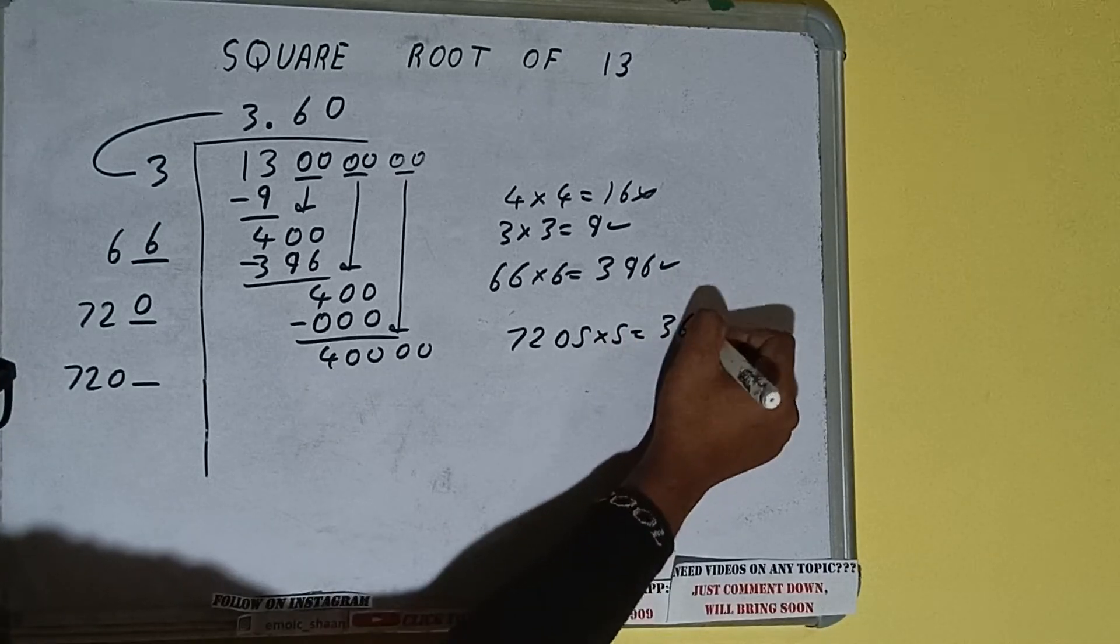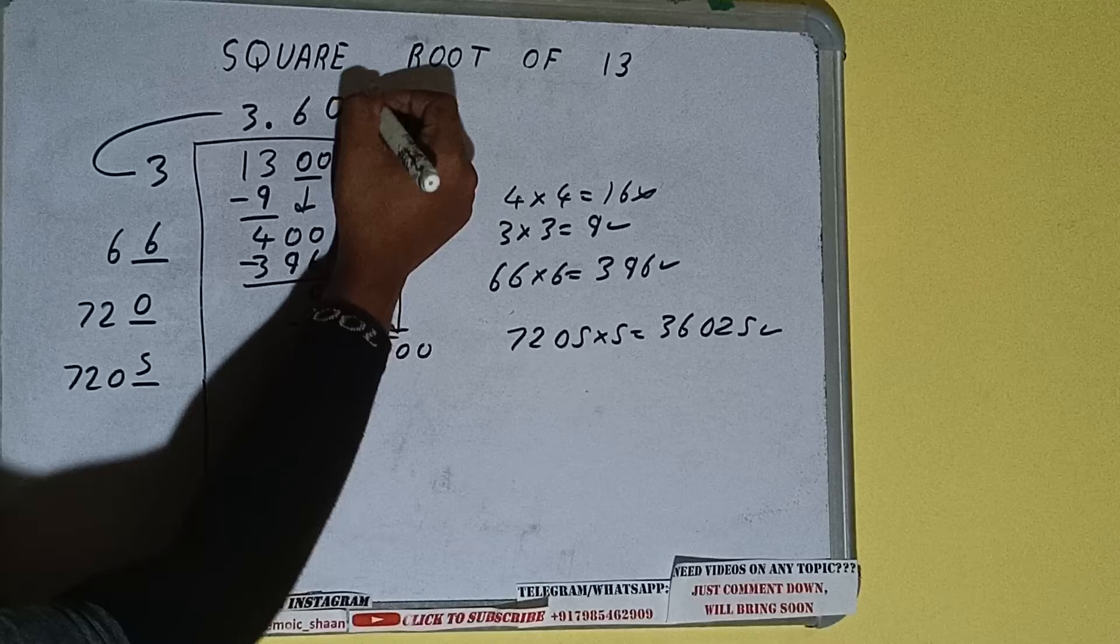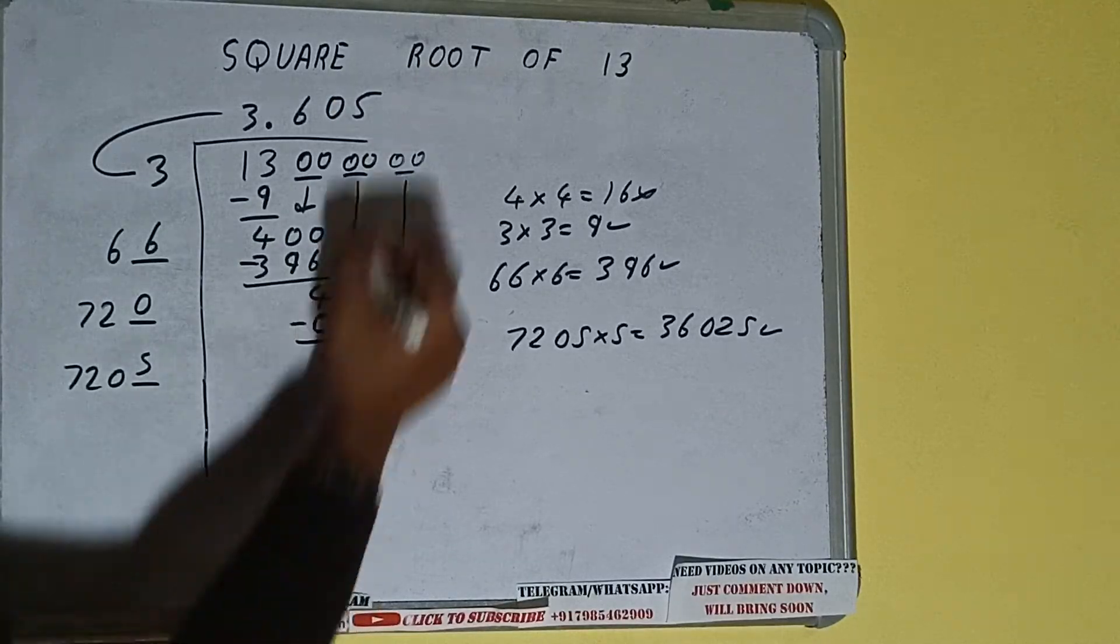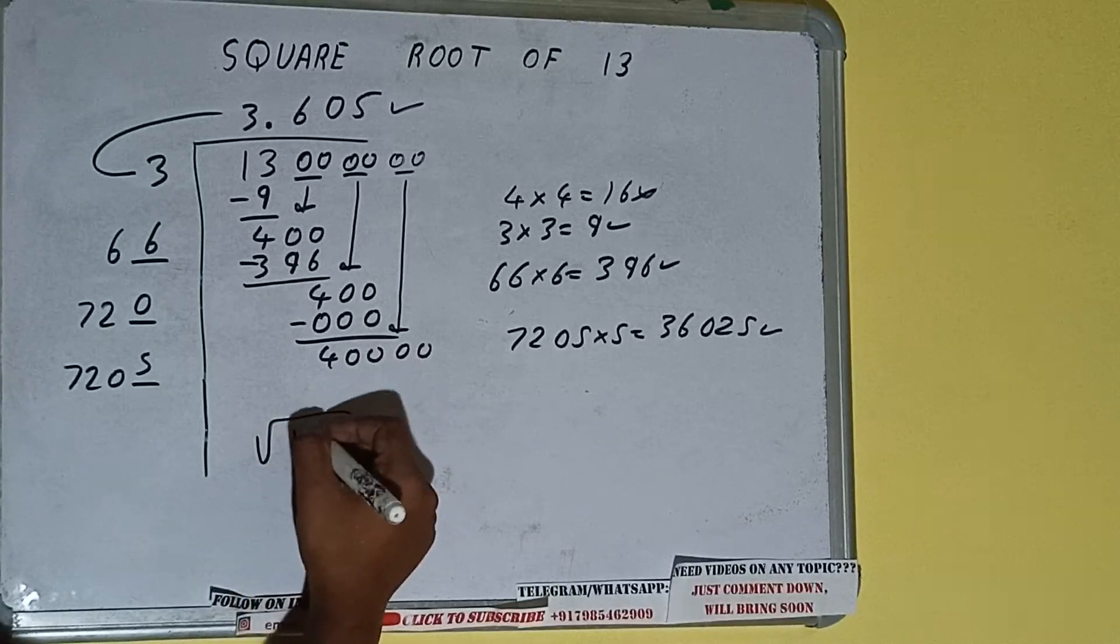It will be 36,025, which is good to take. So 5 here and 5 here. But we don't need to calculate because we got the answer correct up to three decimal places. So square root of 13 will be